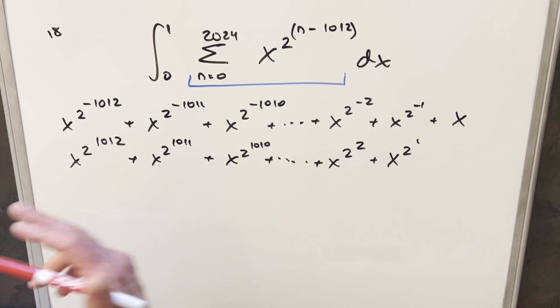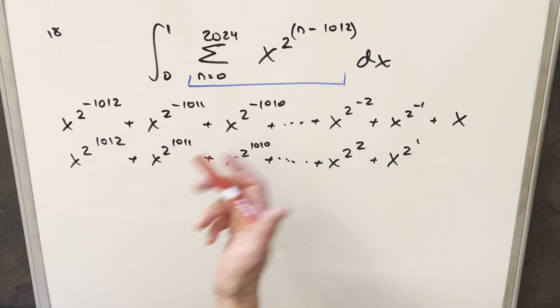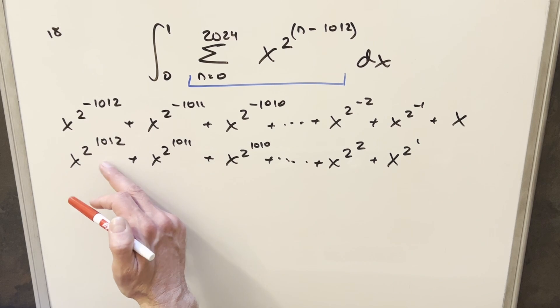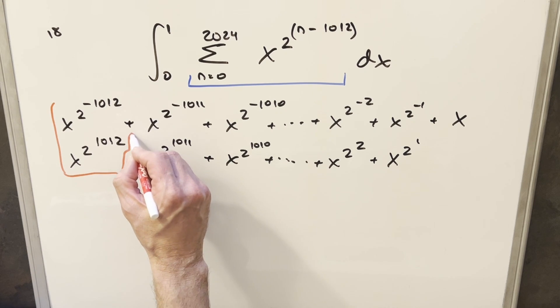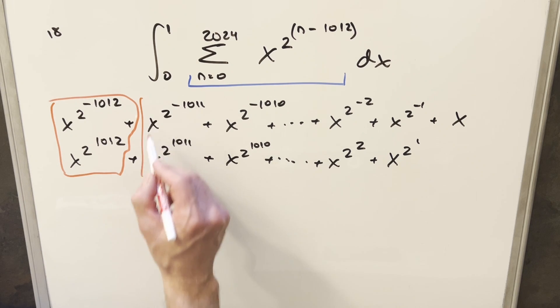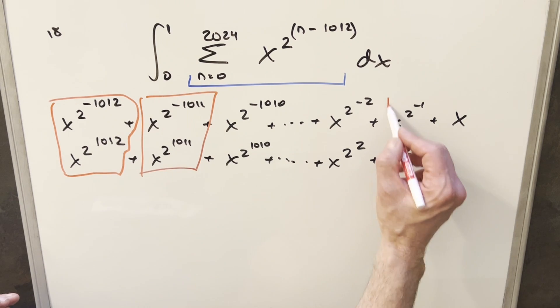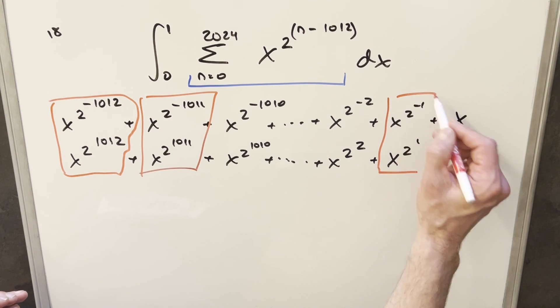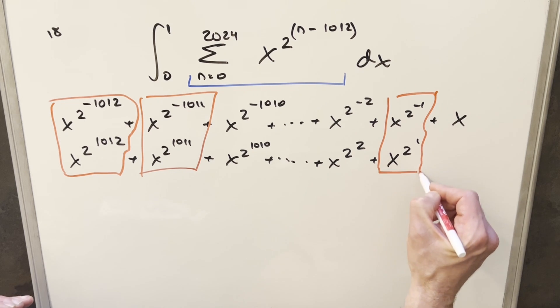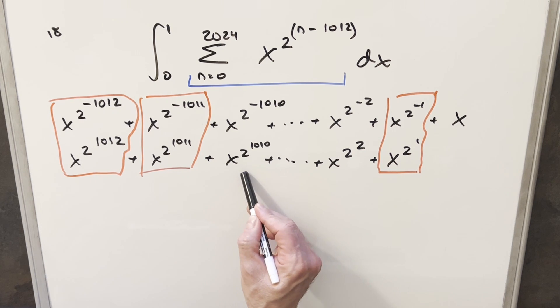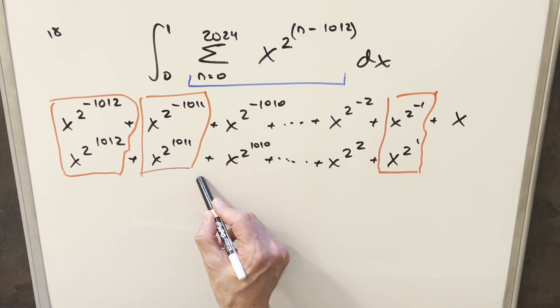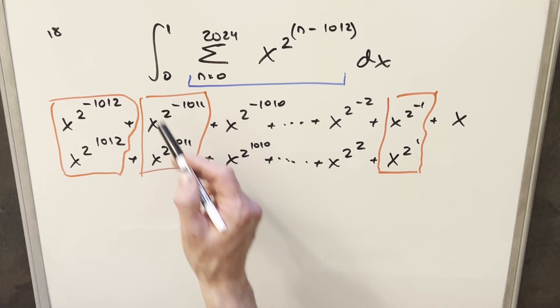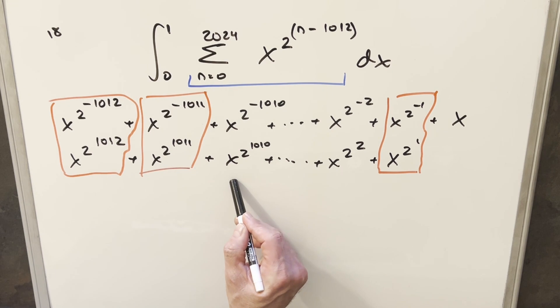But now the reason I write it this way is sometimes when you have a long series like this, it's nice to be able to group common terms. So what I'm going to do is try to group and work with common exponents. Because keep in mind, this whole expanded sum, we could put back into the integral. We could write out 2025 terms. But because it's an integral, we could split this into 2025 separate integrals.